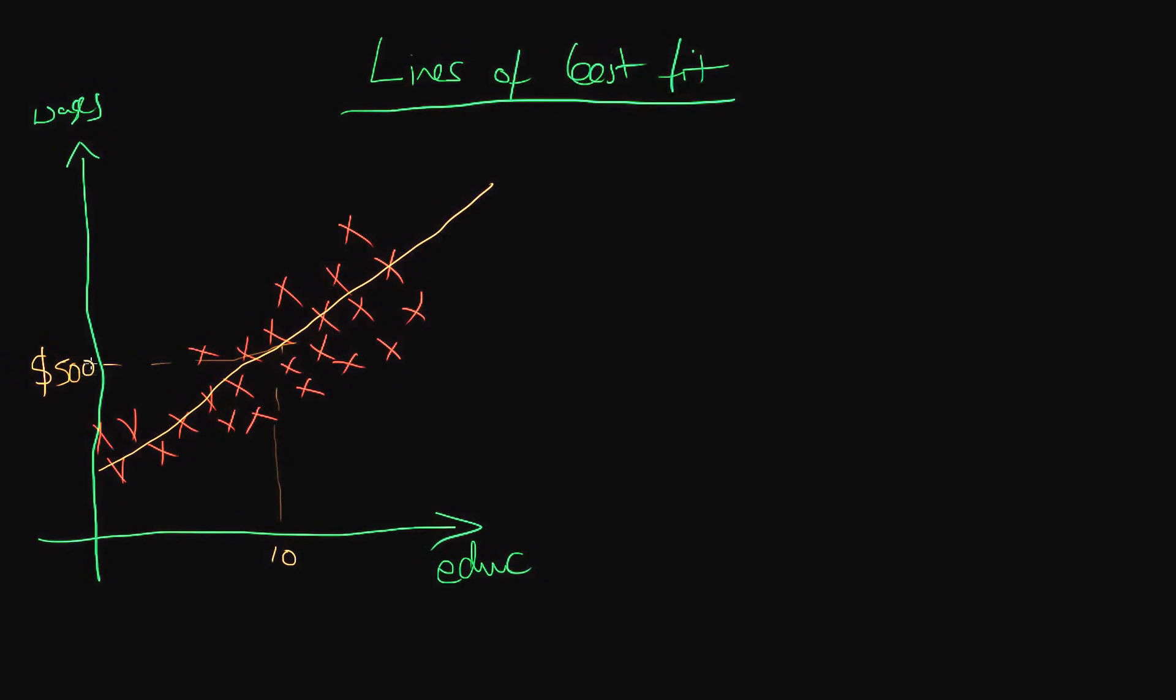So perhaps we expect their average weekly wage to be $500. And then if we increase their education by one year, so now they have 11 years of education, the slope of the line tells us how far we need to walk up if we walk one step along the education axis.